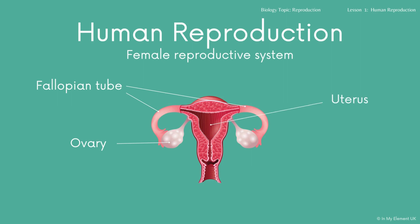We've also got the uterus — you can see the main part there. The uterus is also known as the womb. In the uterus, the fertilised egg will embed, a placenta will form, and the fetus will develop, which will eventually develop into the baby.